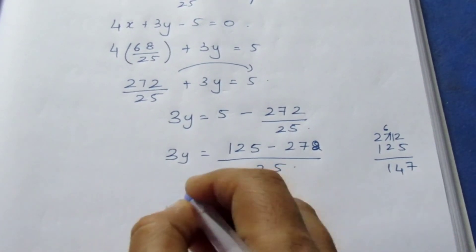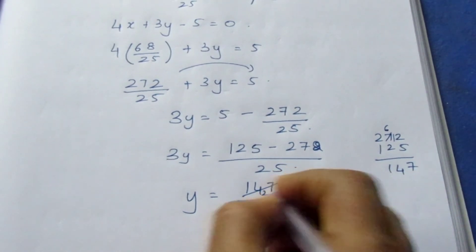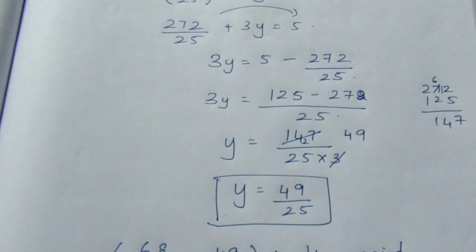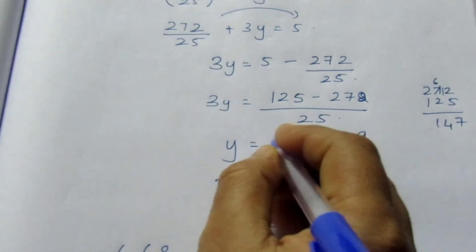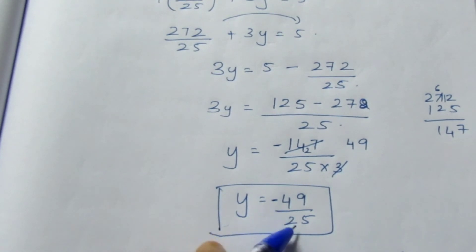Here we can cancel it. Here we can cancel it. It goes in 3 tables. So 3×4 are 12, 3×9 are 27. So y = 49, greater number sign of minus. So y = -49/25.